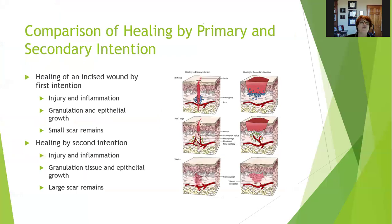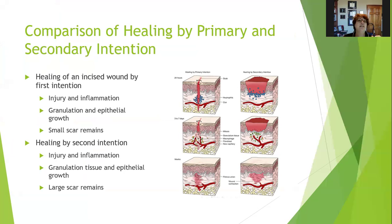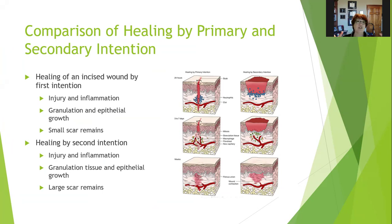Do you remember healing by primary and secondary intention from pathophysiology? Here it is again. Healing by primary intention — the healing of an incised wound by first intention — includes injury and inflammation, and the injury is usually a sterile surgical injury, followed by granulation and epithelial growth, with a small scar remaining. Healing by secondary intention involves injury and inflammation, then granulation and epithelial tissue that has to be bigger because it's a broader wound with less approximated scar edges, and a large scar remains.